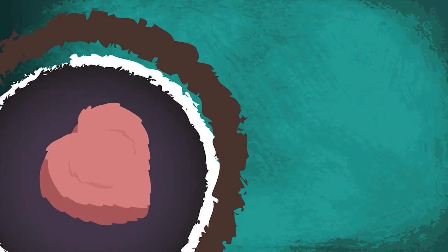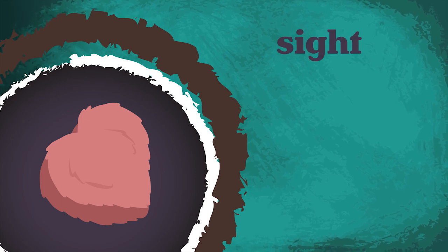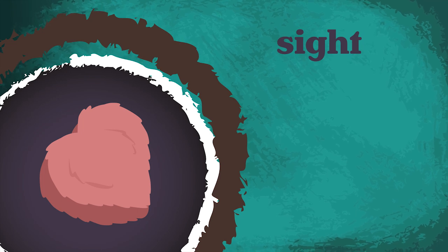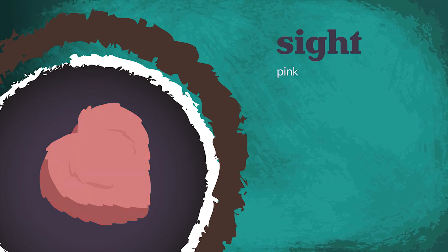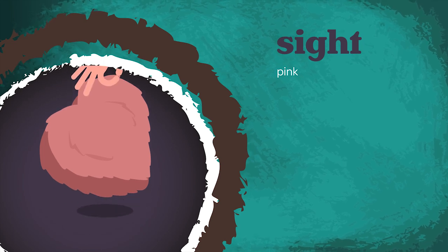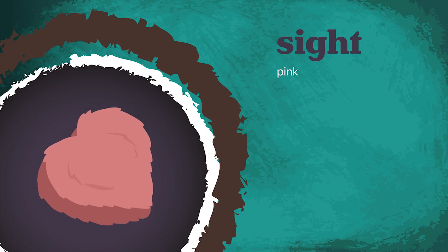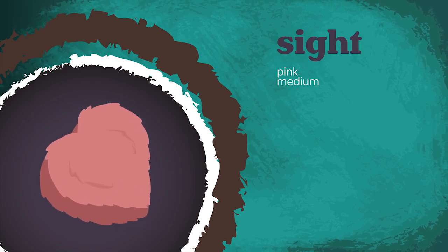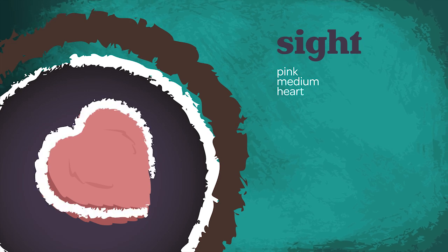Now observe this object. Again, you can use your sense of sight to observe the object's size, shape, and color. It is pink in color. It is small enough to pick up so it is not very large, but it is also not tiny. The object is shaped like a heart.